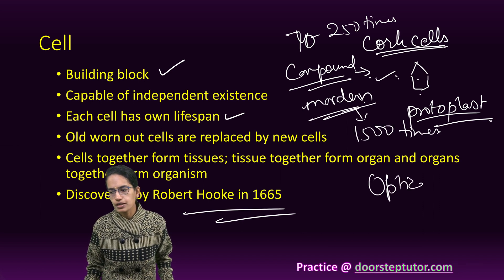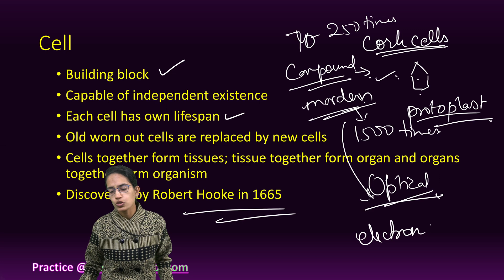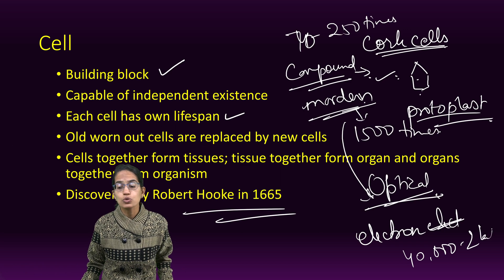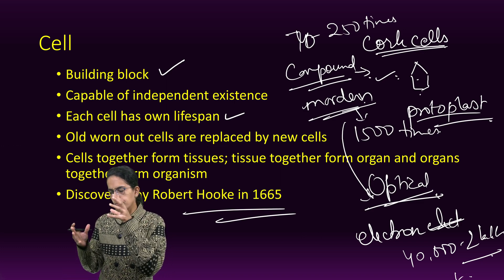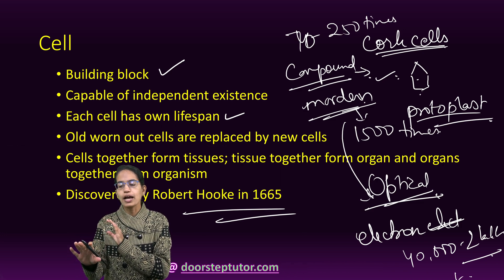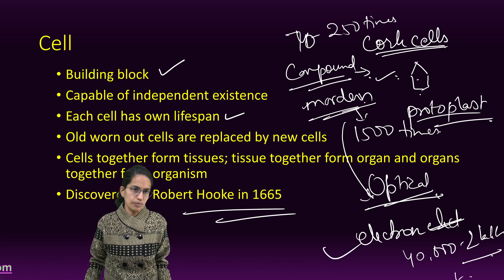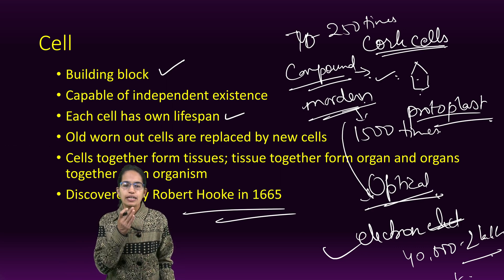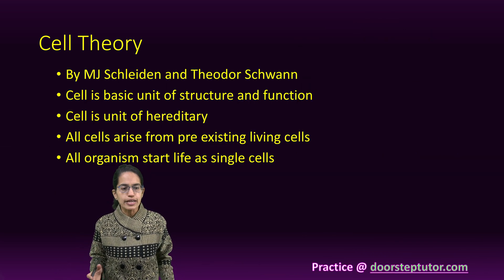We also have optical microscopes — the modern complex microscopes which are optical in nature. After that, we have the electron microscope, which has a magnification capability of around 40,000 to 200,000 times. It also has the capability of making a virtual image when the beam is focused between electromagnets falling onto a fluorescent screen, thereby forming a virtual image. Three-dimensional images could also be seen under an electron microscope. Among the microscopes, the simplest was discovered by Leeuwenhoek, followed by the light or compound microscope, then the modern complex optical microscope, and finally the electron microscope.